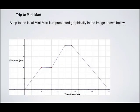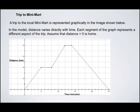Trip to local minimart. A trip to the local minimart is represented graphically in the image shown below. In the model, distance varies directly with time. Each segment of the graph represents a different aspect of the trip. Assume that distance equals zero is home.